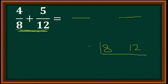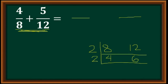8 and 12 are both divisible by 2, so we write 2. Then divide: 8 divided by 2 is 4, and 12 divided by 2 is 6. Since 4 and 6 are still divisible, we can divide both by 2. We always use prime numbers as divisors, and 2 is the smallest prime number. So 2 again, giving us 3.